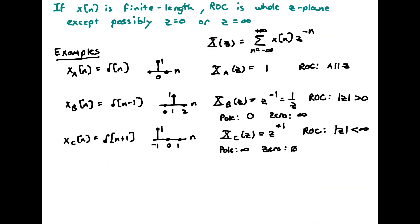For finite length sequences, the region of convergence is the whole Z-plane, except possibly Z equals zero or Z equals infinity. For example, if X_A of N is delta of N — a single delta function at the origin — then X_A of Z equals one, which converges everywhere. So the region of convergence is all Z.